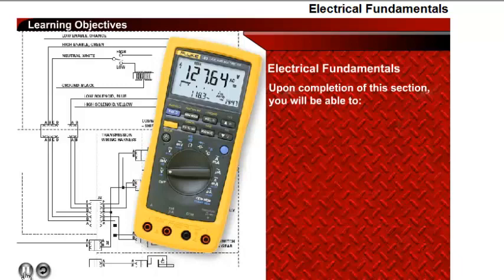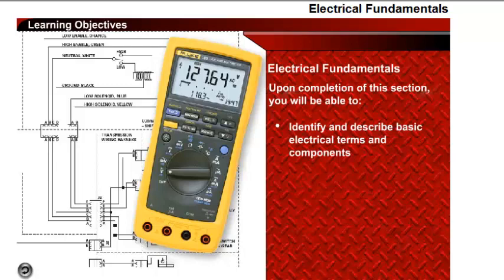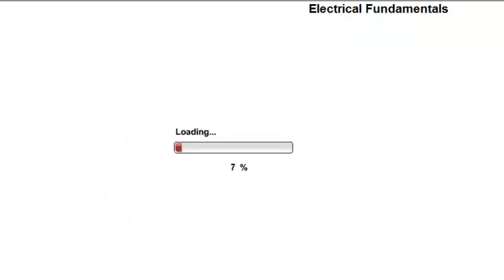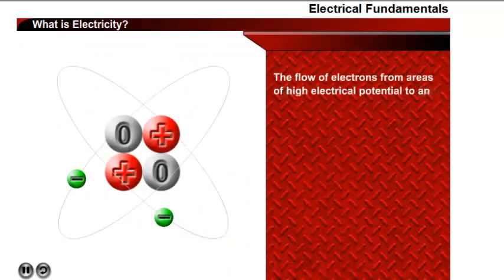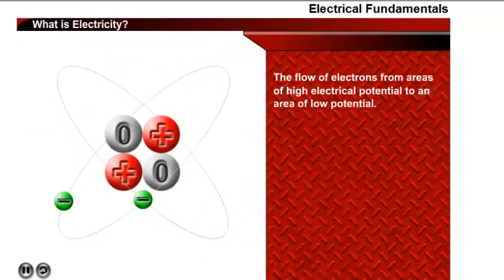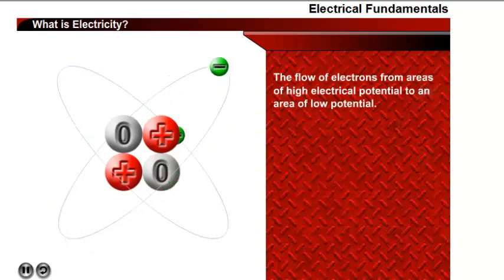In this section you will be able to identify and describe basic electrical terms and components. Electricity is the flow of electrons from an area of high electrical potential to an area of low electrical potential.